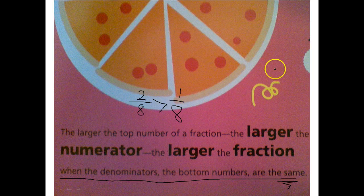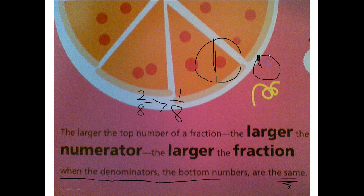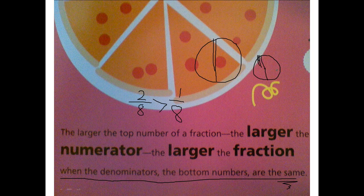If we had a large pizza and a small pizza, and we divide each in half, one-half of the large pizza is definitely larger than one-half of the small pizza, even though we're saying half and half. So we have to talk about things that are the same size when comparing fractions.